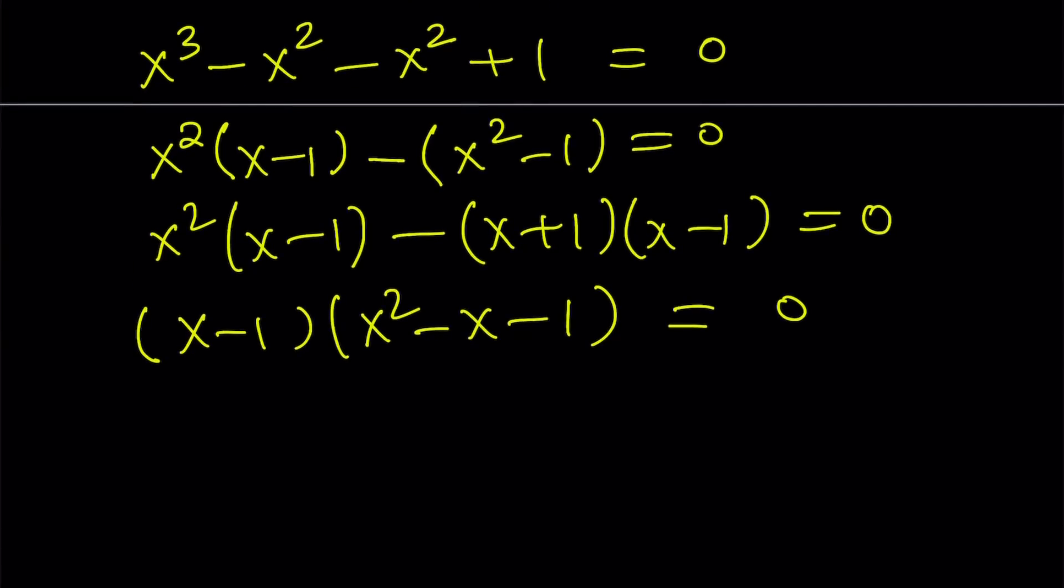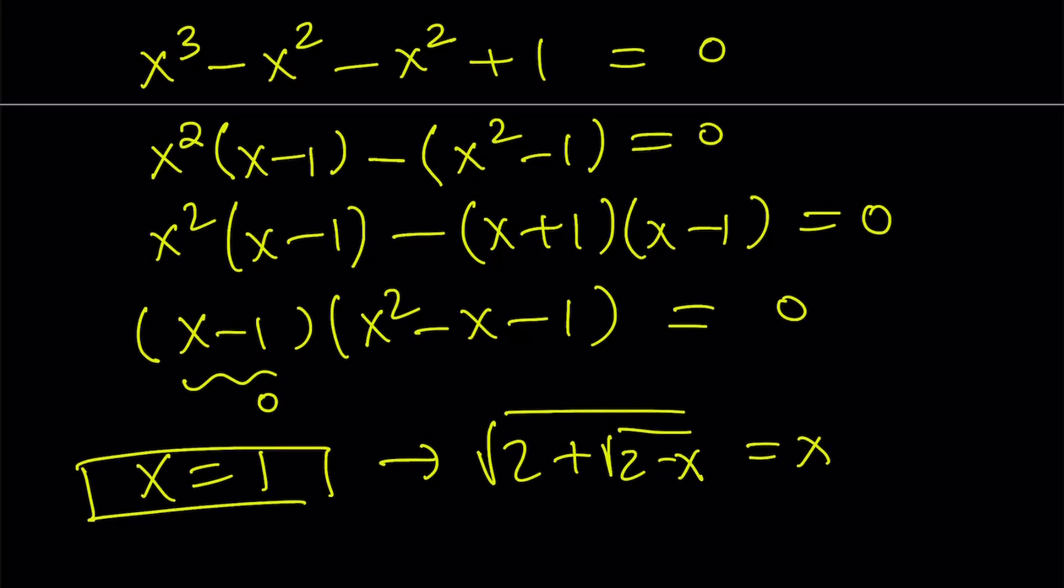So now from here, we get a quadratic and a linear, so x minus 1 equals 0 gives us x equals 1. Great. Not so great, because if you go back to the original equation, not the expression but the equation, you'll notice that x equals 1 gives us the following. So 1, square root of 1 is 1, so it's square root of 3 equals 1. Obviously that's not true, so x equals 1 does not work. We're going to reject it. Yay!